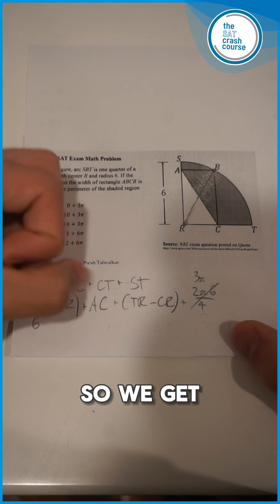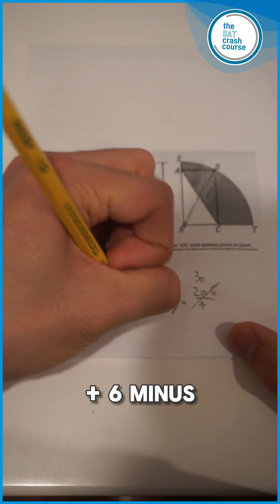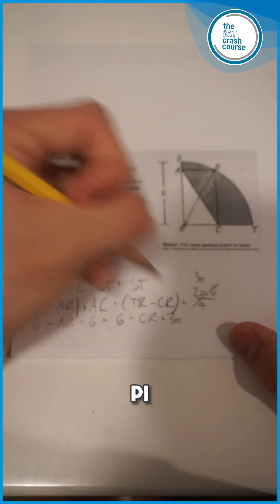So we get 6 minus AR plus 6 plus 6 minus CR, and then we get plus 3π.